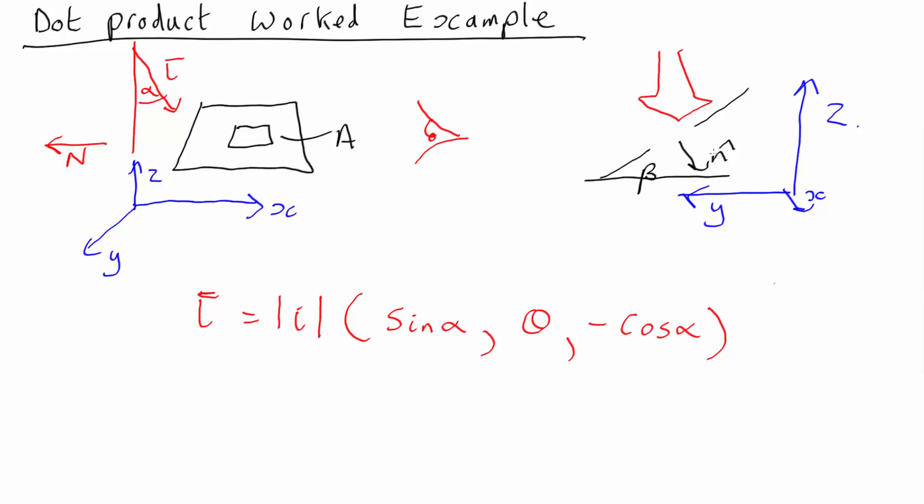How about the normal vector down here? So the normal vector is going something like that direction. And if this angle is beta, then that angle is beta. So that angle must be beta. So that angle there is beta.